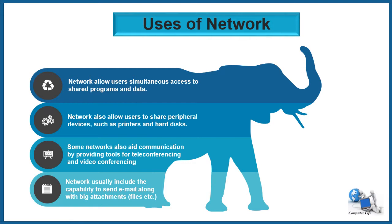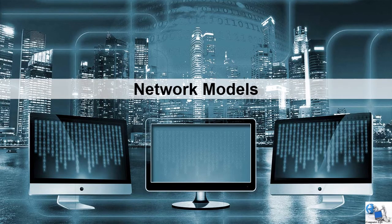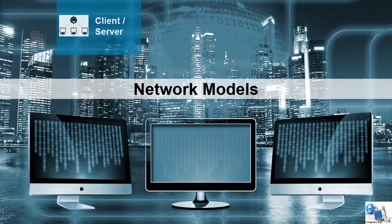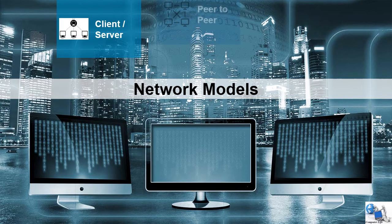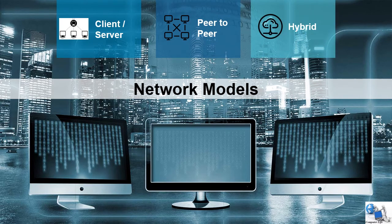Networks usually include the capability to send email along with large attachments. If you want to share something with a friend or colleague, you can do so easily. Because of the availability of networks, we can share images, pictures, movie clips, and office files. There are three types of network models: client-server, peer-to-peer, and hybrid network.